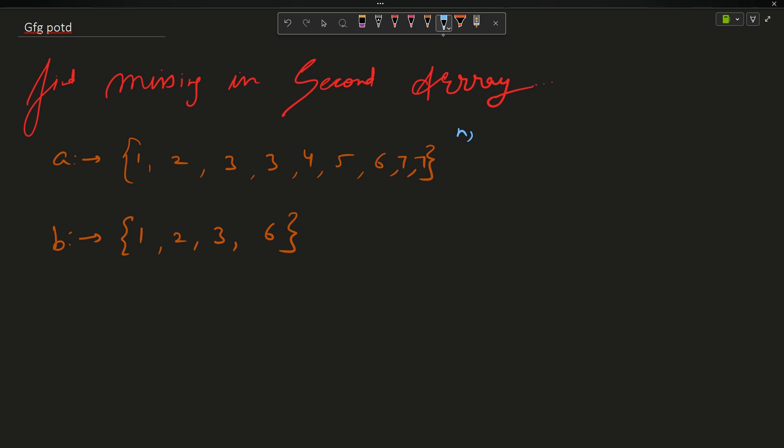You can see the arrays can be of different sizes. Suppose this size is N, this size is M. Now the only task you have to perform is find the elements which are present in A but not in B.